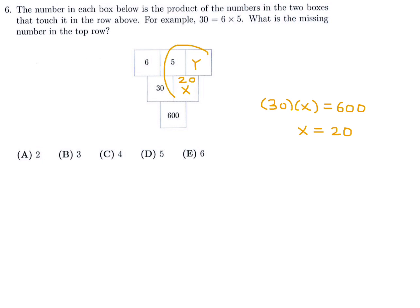Now looking at the next pair: 5 times y equals 20, so y equals 20 divided by 5, which is 4. That is the missing number in the top row. Number 6, the answer is 4, which is choice C.